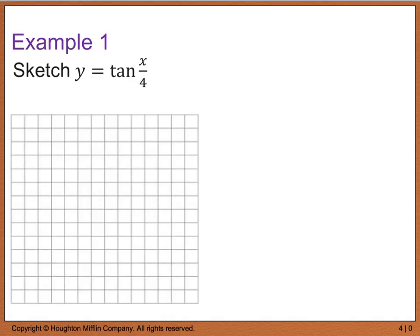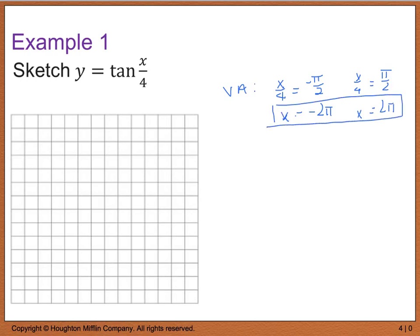For example 1, sketch y = tan(x/4). First, find vertical asymptotes by setting x/4 = -pi/2, giving x = -2pi, and x/4 = pi/2, giving x = 2pi. The x-intercept is found from the midpoint between -2pi and 2pi, so x = 0.